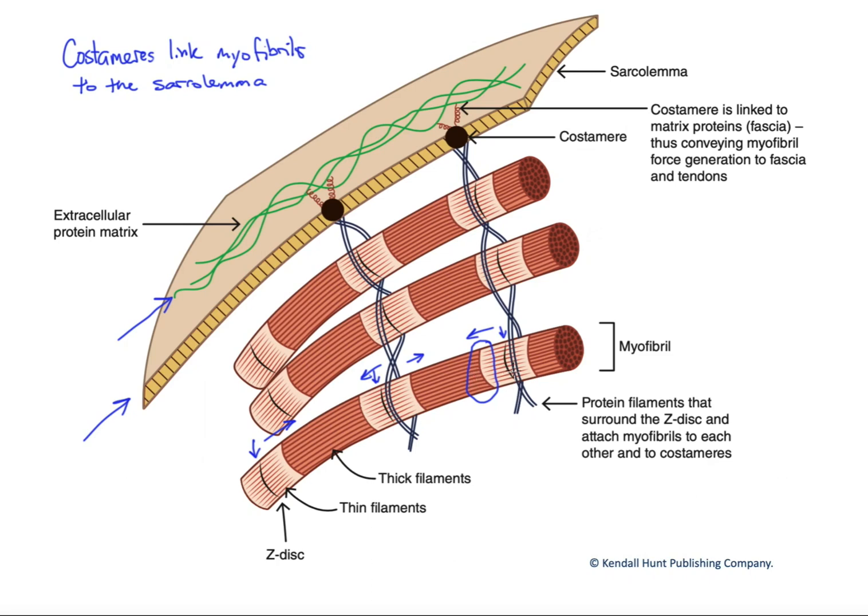What we have is the Z-disc proteins are actually linked to one another via protein filaments. In other words, the myofibrils are suspended within a complex web of protein fibers. And those protein fibers are linked, at the membrane, to that series of proteins called the costamere.